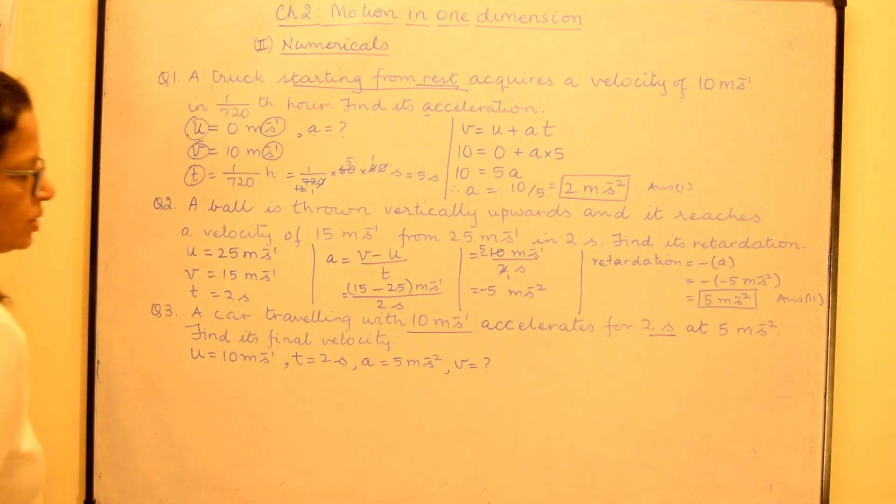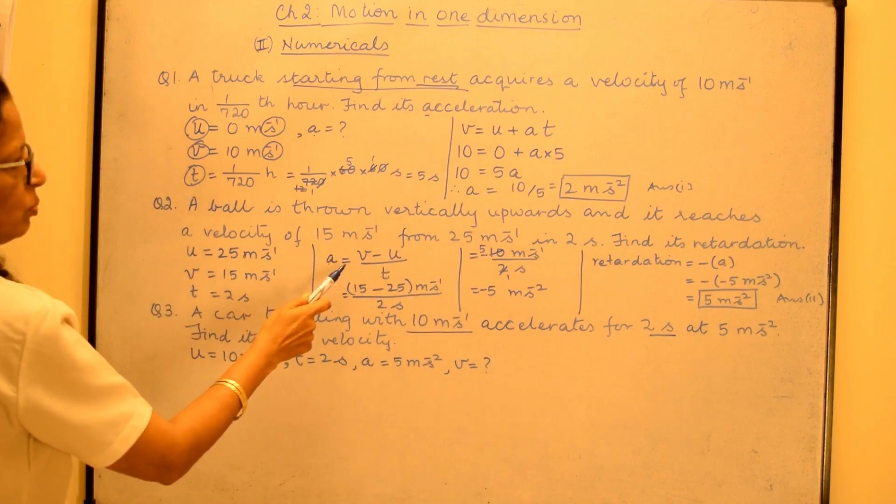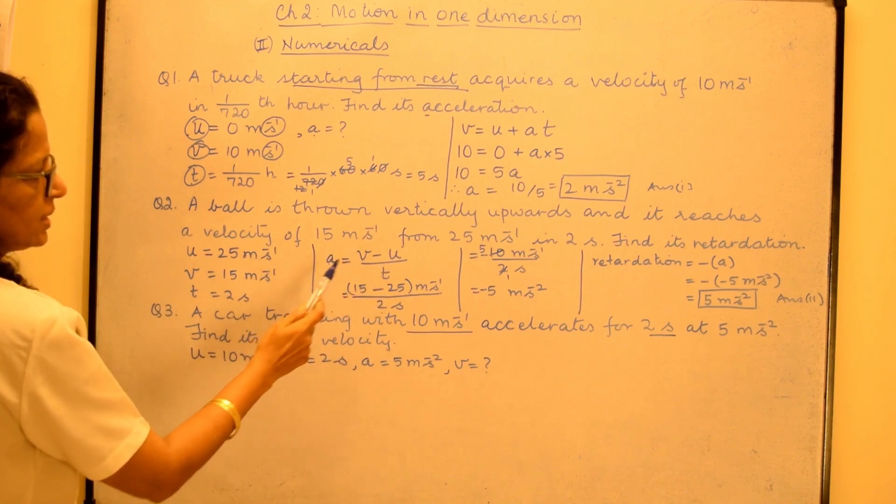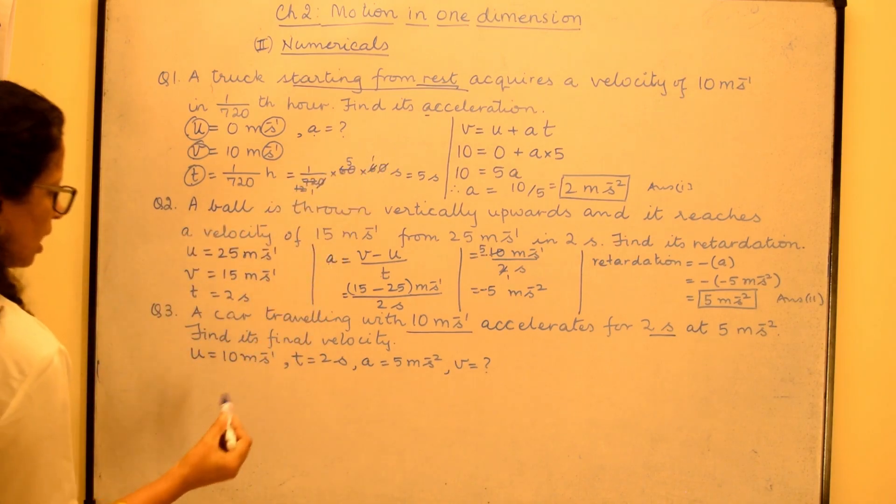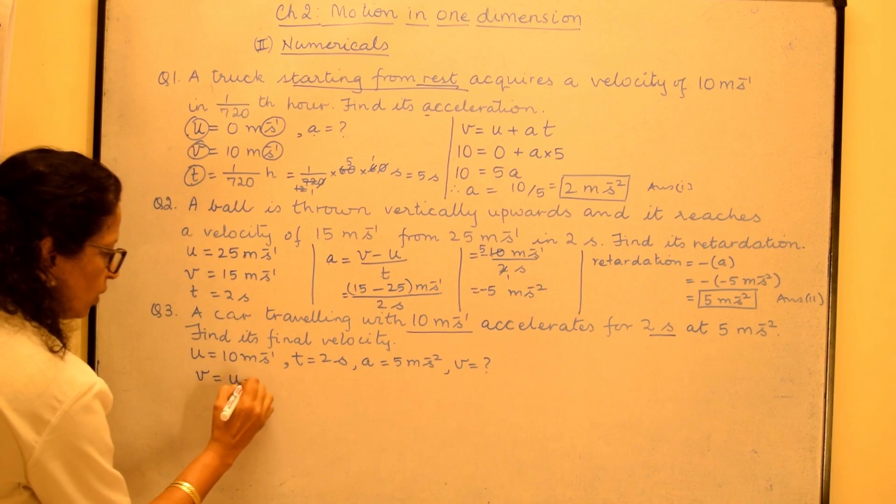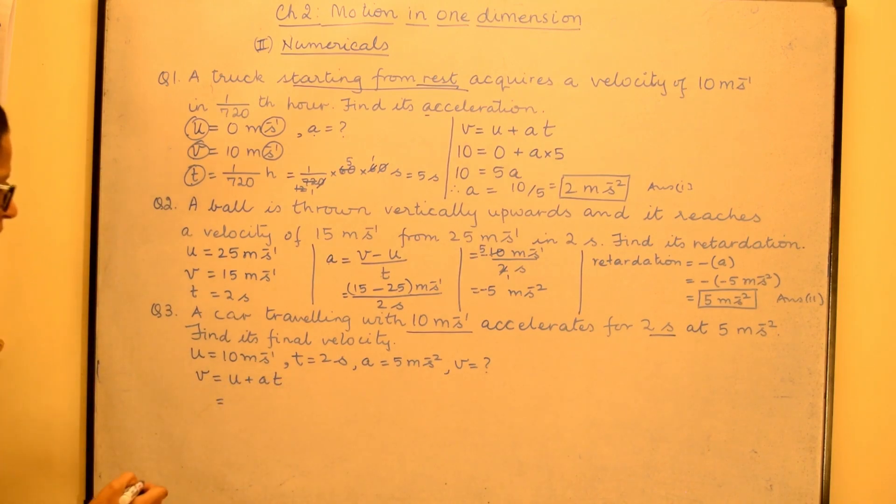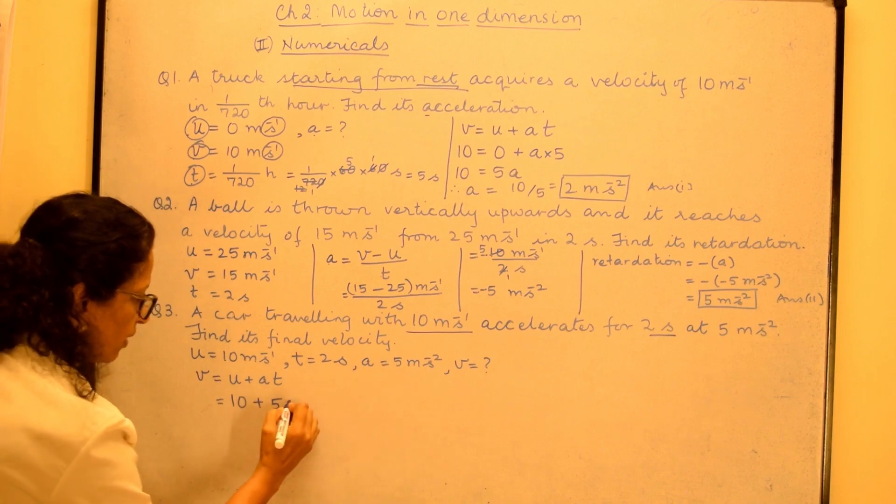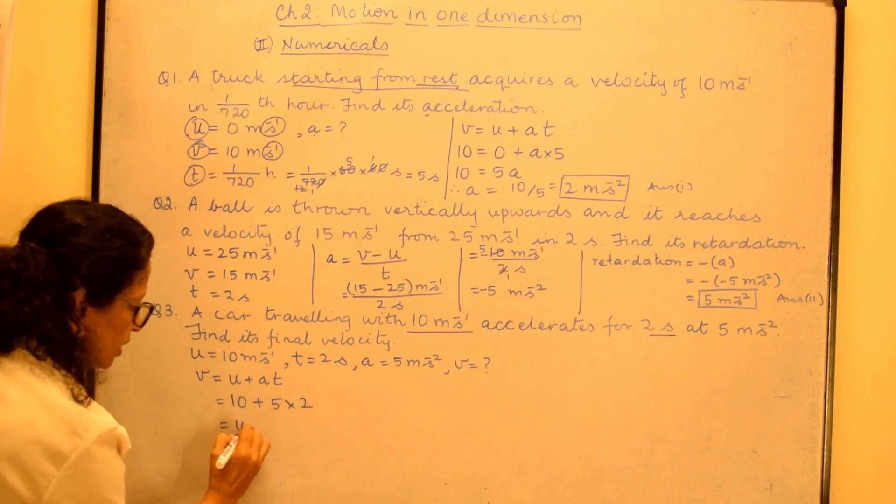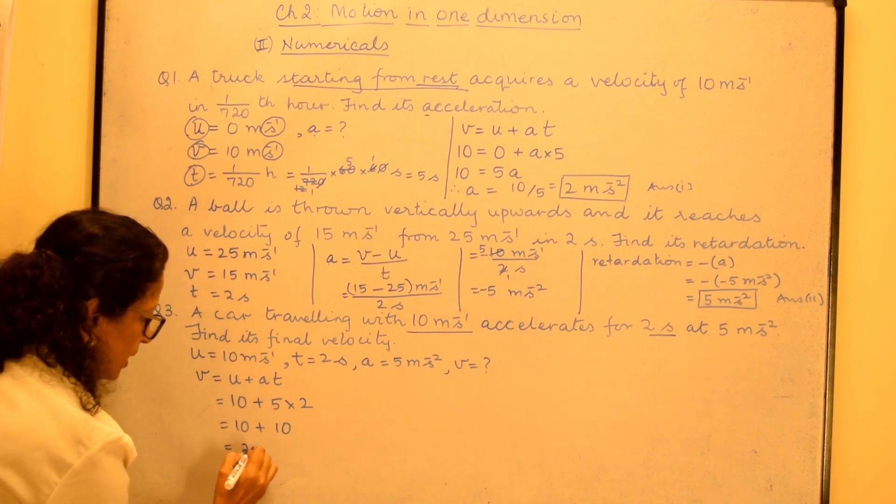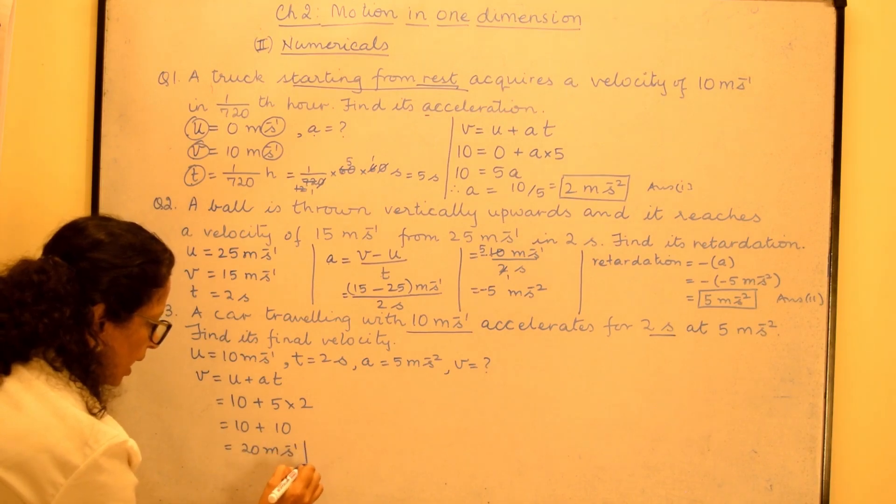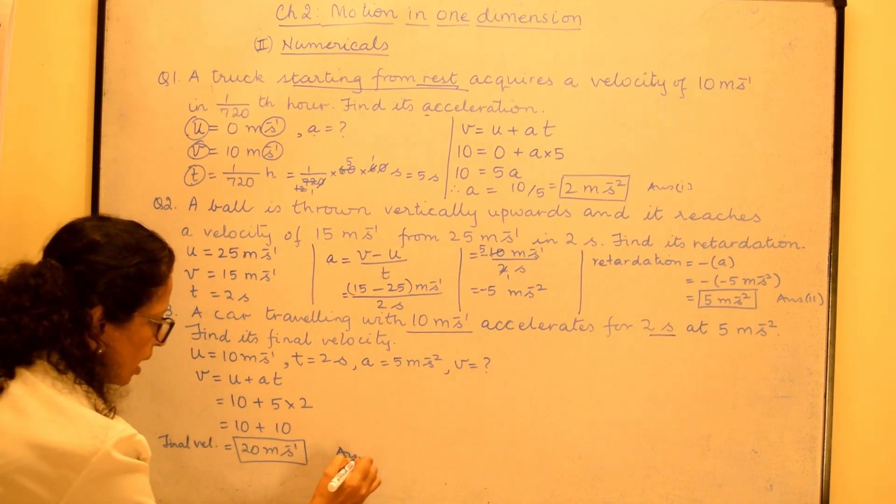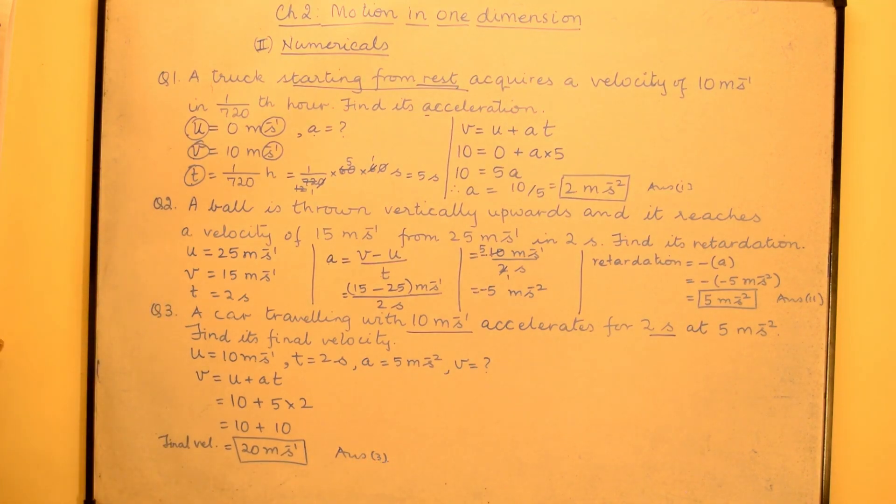Now we can use either this or this. Both of them are the same. If you look very carefully, v minus u will be at. And if you take u this side, v will be equal to u plus at. So both these formulas are the same. I am choosing to write v is equal to u plus at. So equal to below equal to put the values over here. 10 plus 5 is the value of acceleration into time is 2. And that will give 10 plus 10 which is 20 meter per second. And that is our final velocity. And that is our third answer.